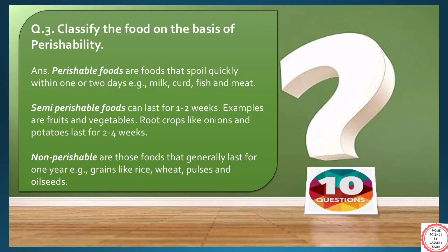Perishable foods are those foods that spoil quickly within one or two days. Examples can be milk, curd, fish and meat. Semi-perishable foods can last for one to two weeks. In this, we can include the example of fruits and vegetables.